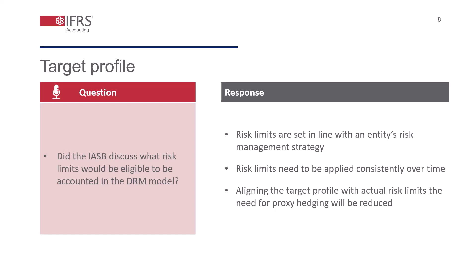For example, many entities focus on managing the PV01 exposure from underlying banking book positions and set risk limits in PV01 terms for different time buckets. Some other entities may focus more on achieving notional matches by maturity and set risk limits based on variability in NII, or even some combination of approaches. By aligning the target profile with the actual risk limits used for entities' risk management, it also helps to reduce the need for proxy hedging in accounting, which would hopefully improve the transparency in the DRM model.